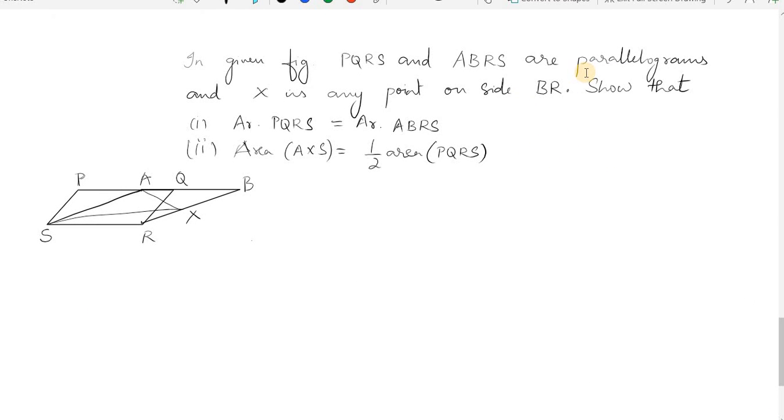Hi. In the given figure, PQRS and ABRS are parallelograms and X is any point on side BR. Show that: (i) area of PQRS equals area of ABRS, and (ii) area of AXS is equal to half the area of PQRS.